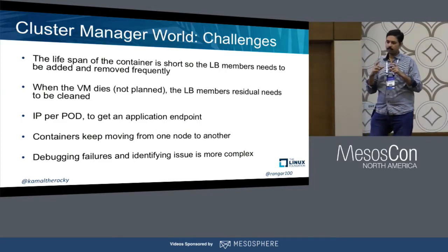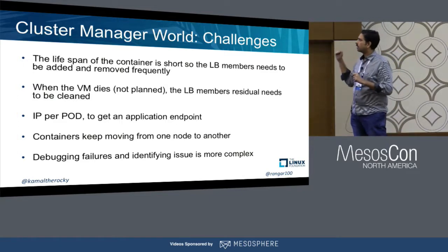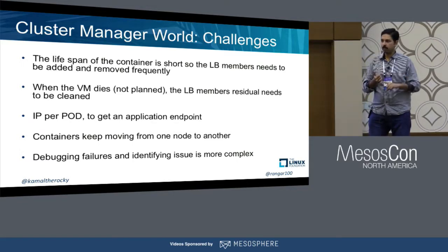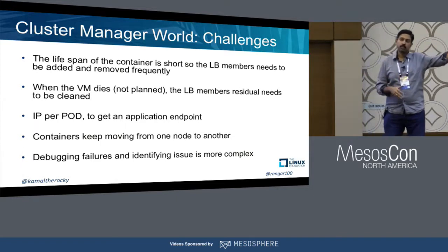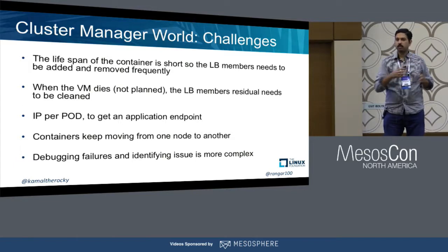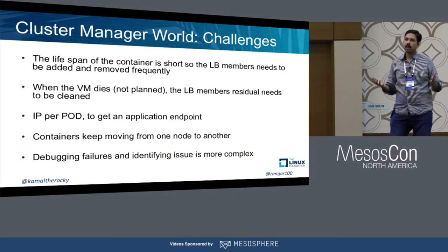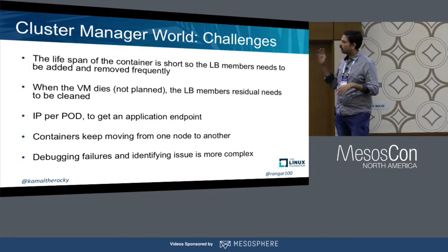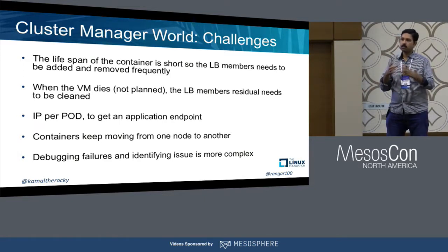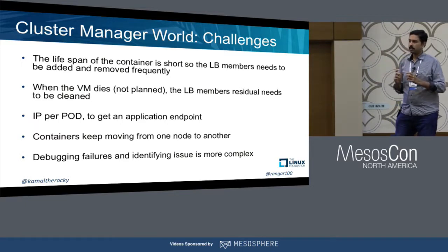Just from looking at these patterns, these are the challenges we identified. One is that the lifespan of the LB configuration is very short — anytime a pod comes or goes, the configuration in the load balancer has to be updated. That means the load balancer's control plane — the API layer — should be very responsive. If you bring up 10,000 containers by deleting 10,000, that means 10,000 remove operations and another 10,000 add operations, so it should be scalable and performant. If it is not performant, operations will get stuck and queued up, meaning new containers cannot take traffic. The second challenge is that if a whole VM goes down, there may be residual entries in the load balancer that need an external system to detect and remove.